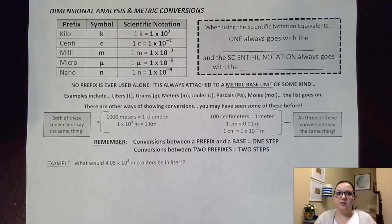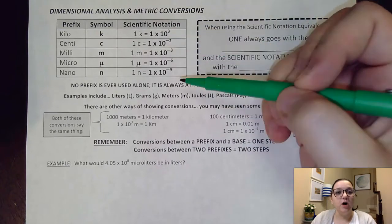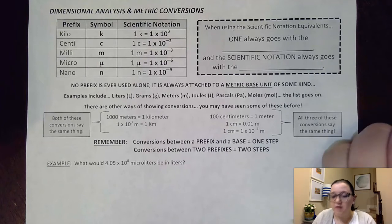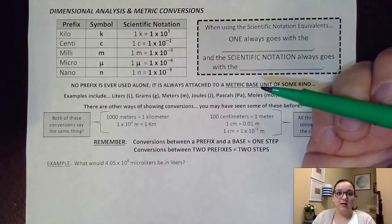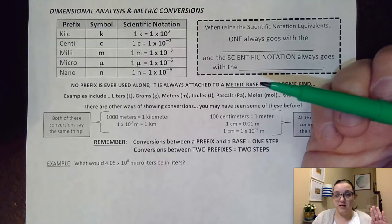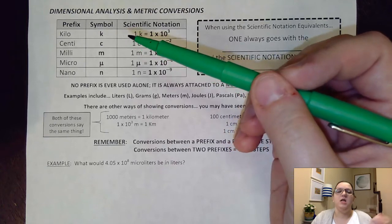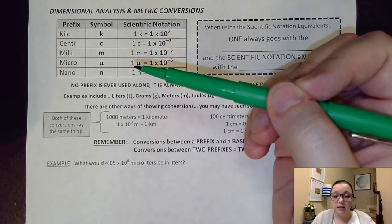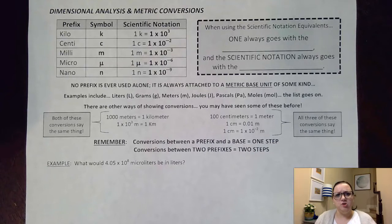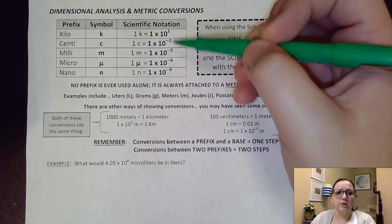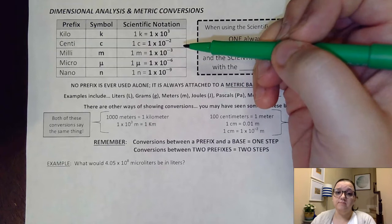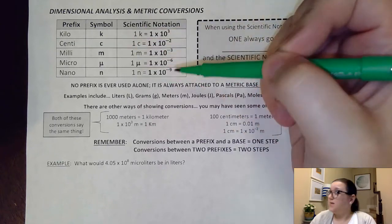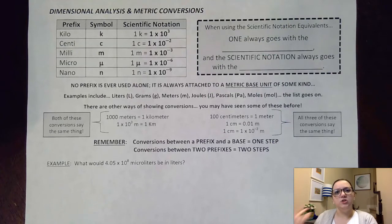But I find it way easier and just way more consistent to memorize what are called scientific notation equivalents. Now you notice here I only put some metric conversions like kilo, centi, milli, micro, nano. That's clearly not all of the metric prefixes that exist, but these are the ones that you see most often used in AP chemistry. So I find these scientific notation equivalents way easier to memorize than all of those other random conversions.